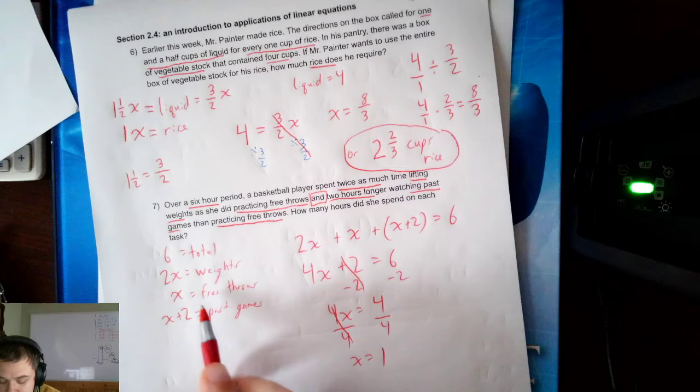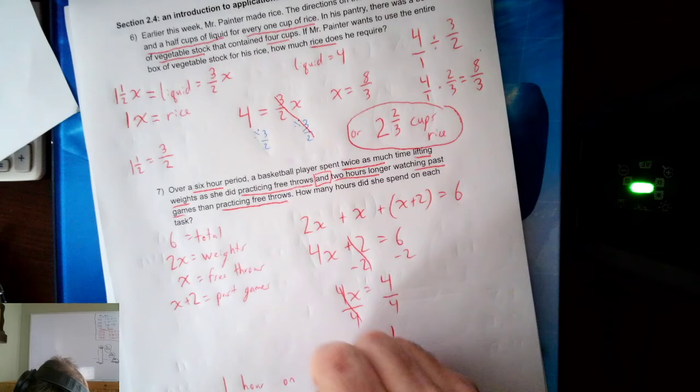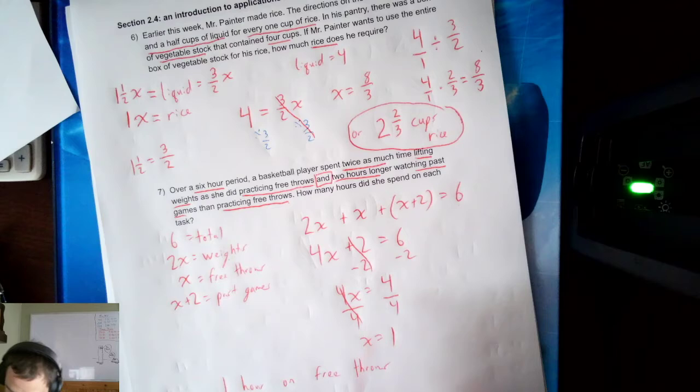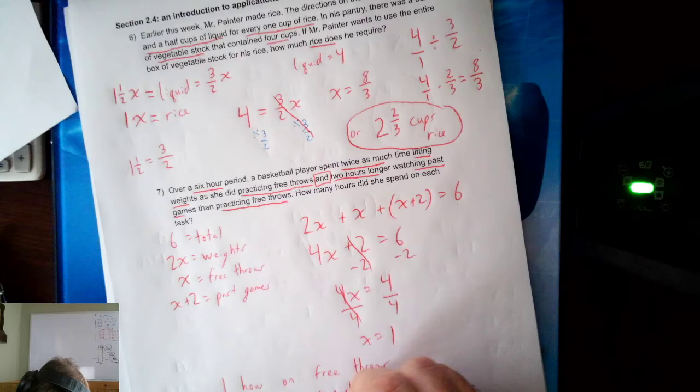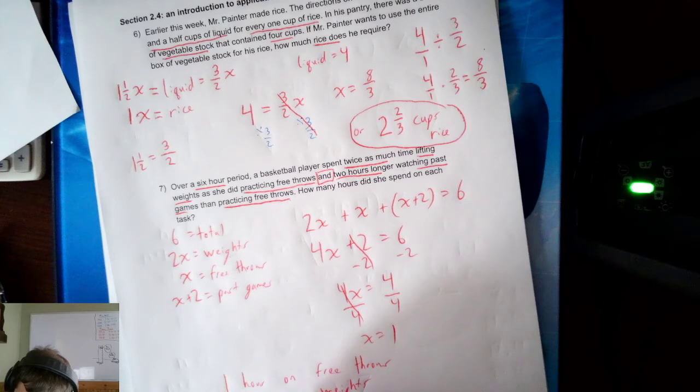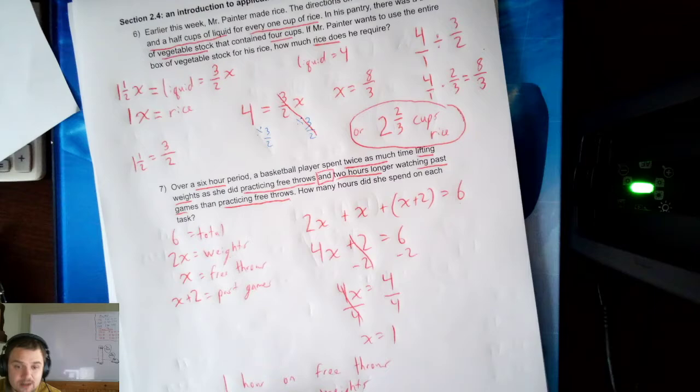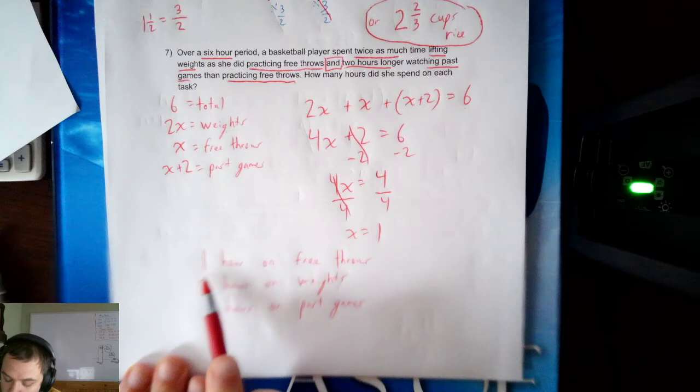So for free throws, I spent 1 hour. 1 hour on free throws. Twice as long as 1 hour would be 2 hours on weights. And 1 plus 2 would be 3 hours on past games.